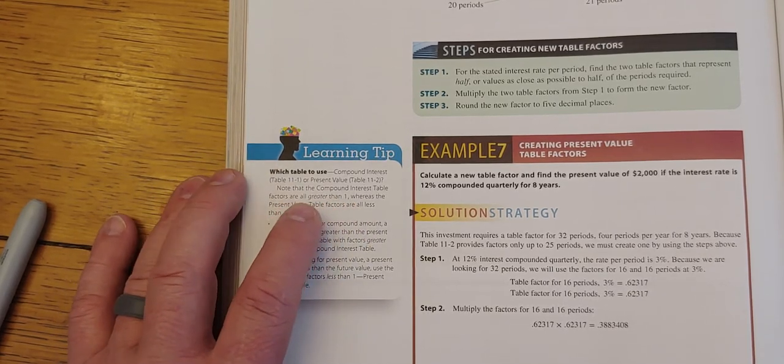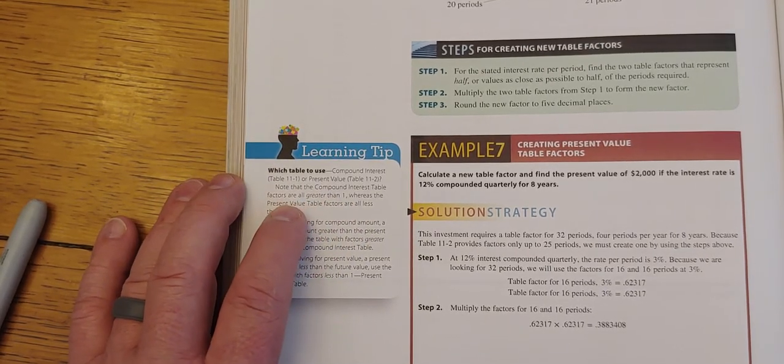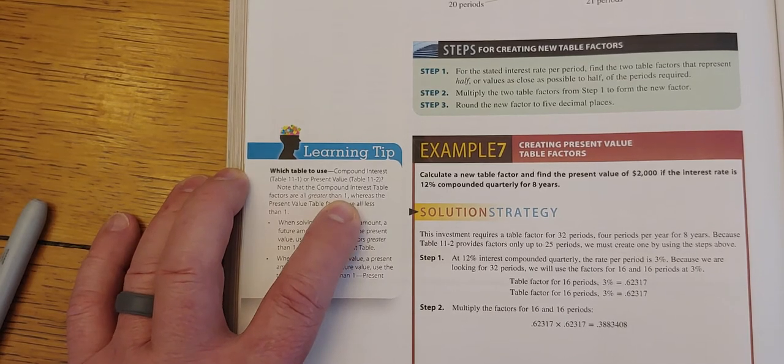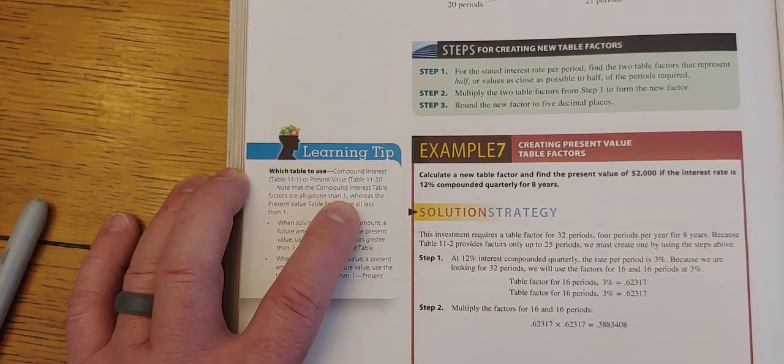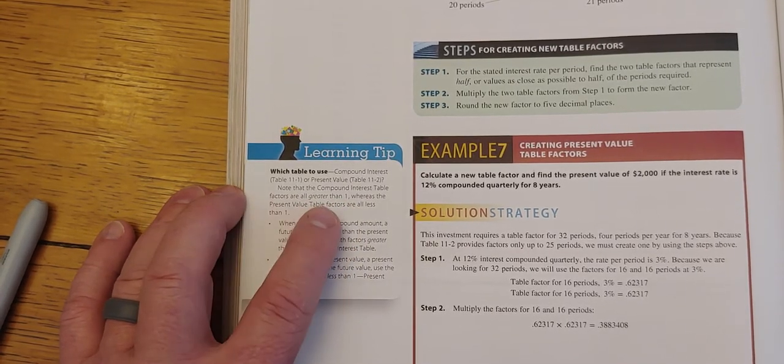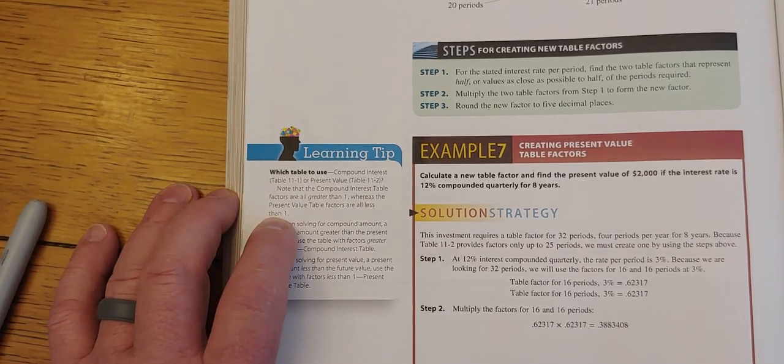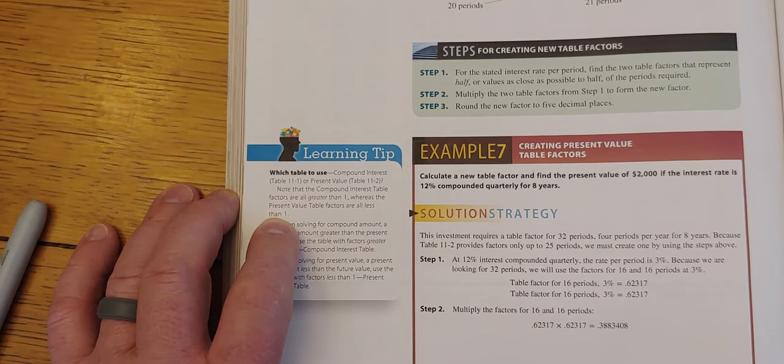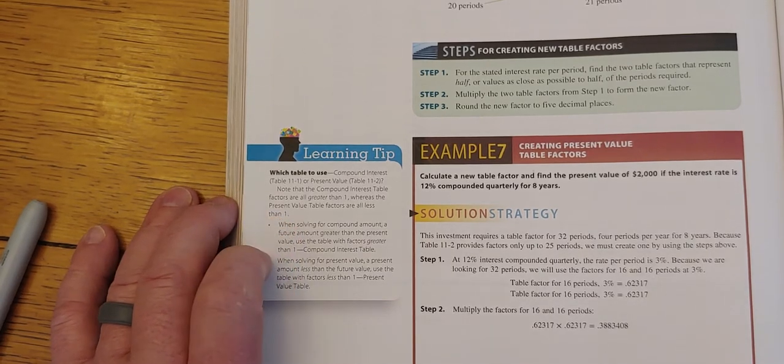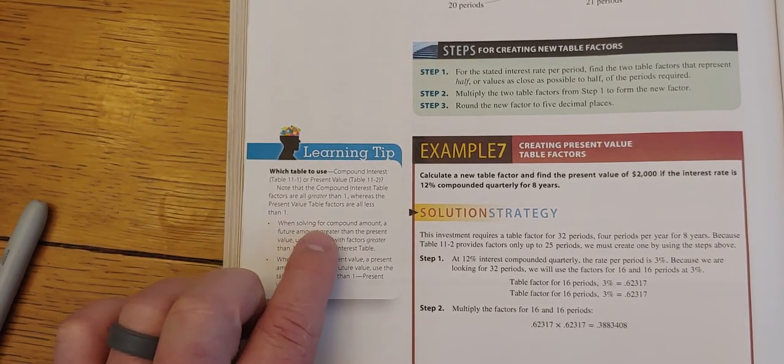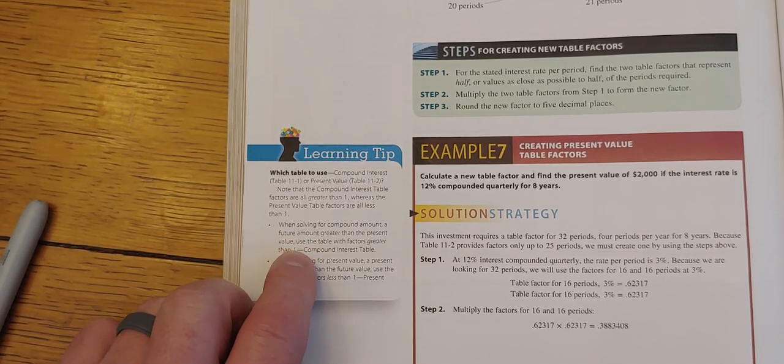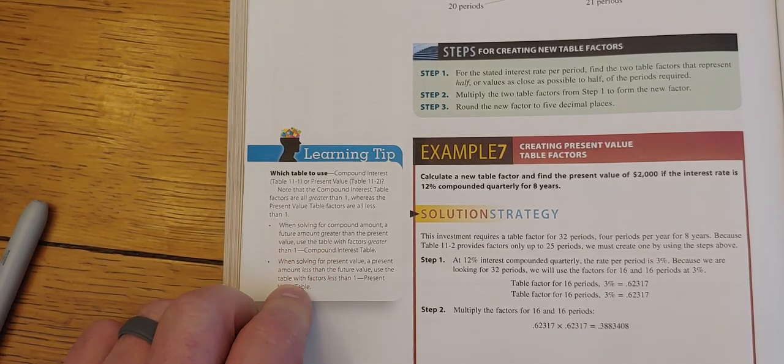All right. So if you're finding out the compounded amount or the future value, that's what I was saying. All the factors are greater than one because you want a bigger number. So when solving for the compounded amount, a future amount greater than the present value, use the table factors greater than one.